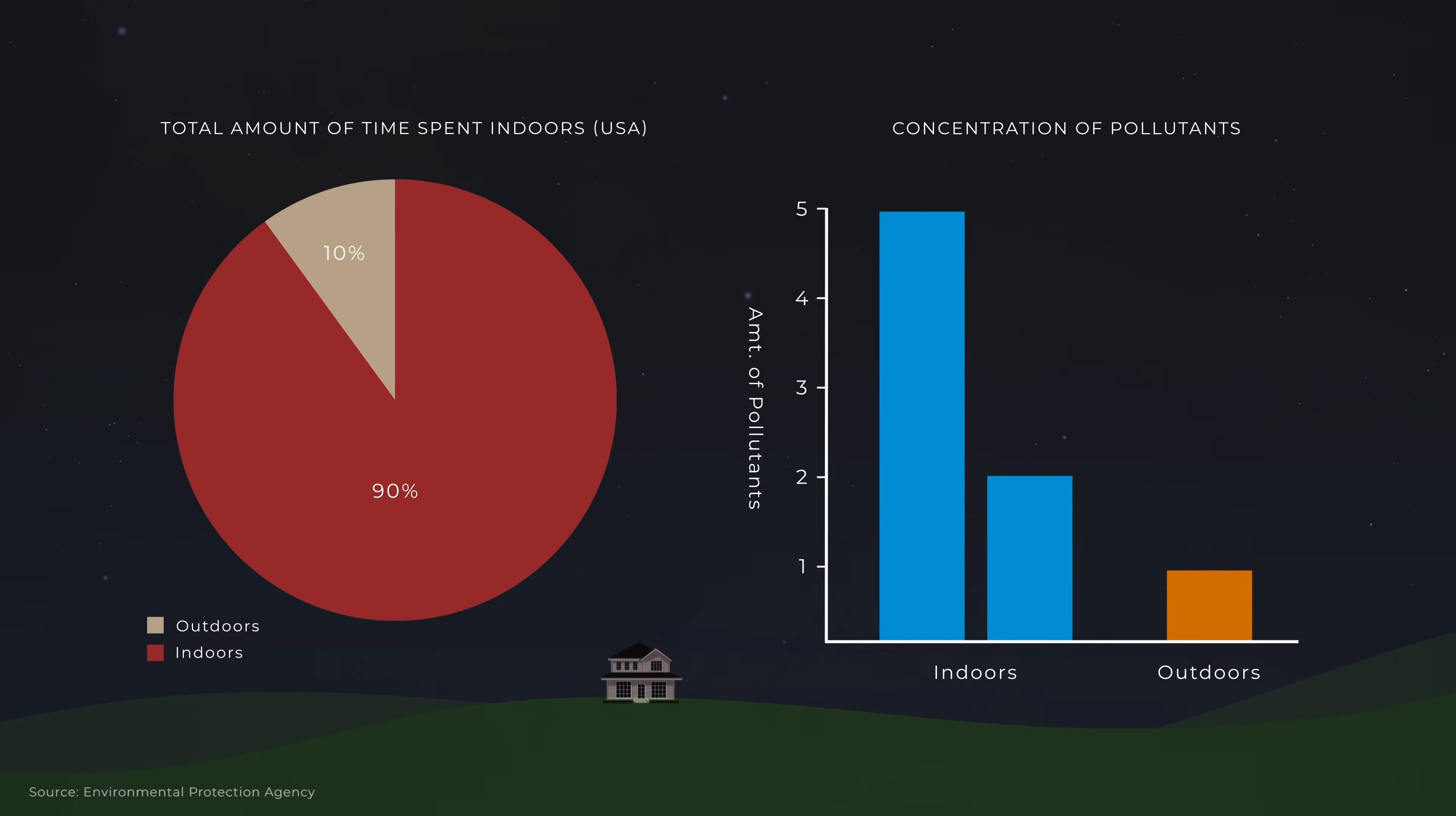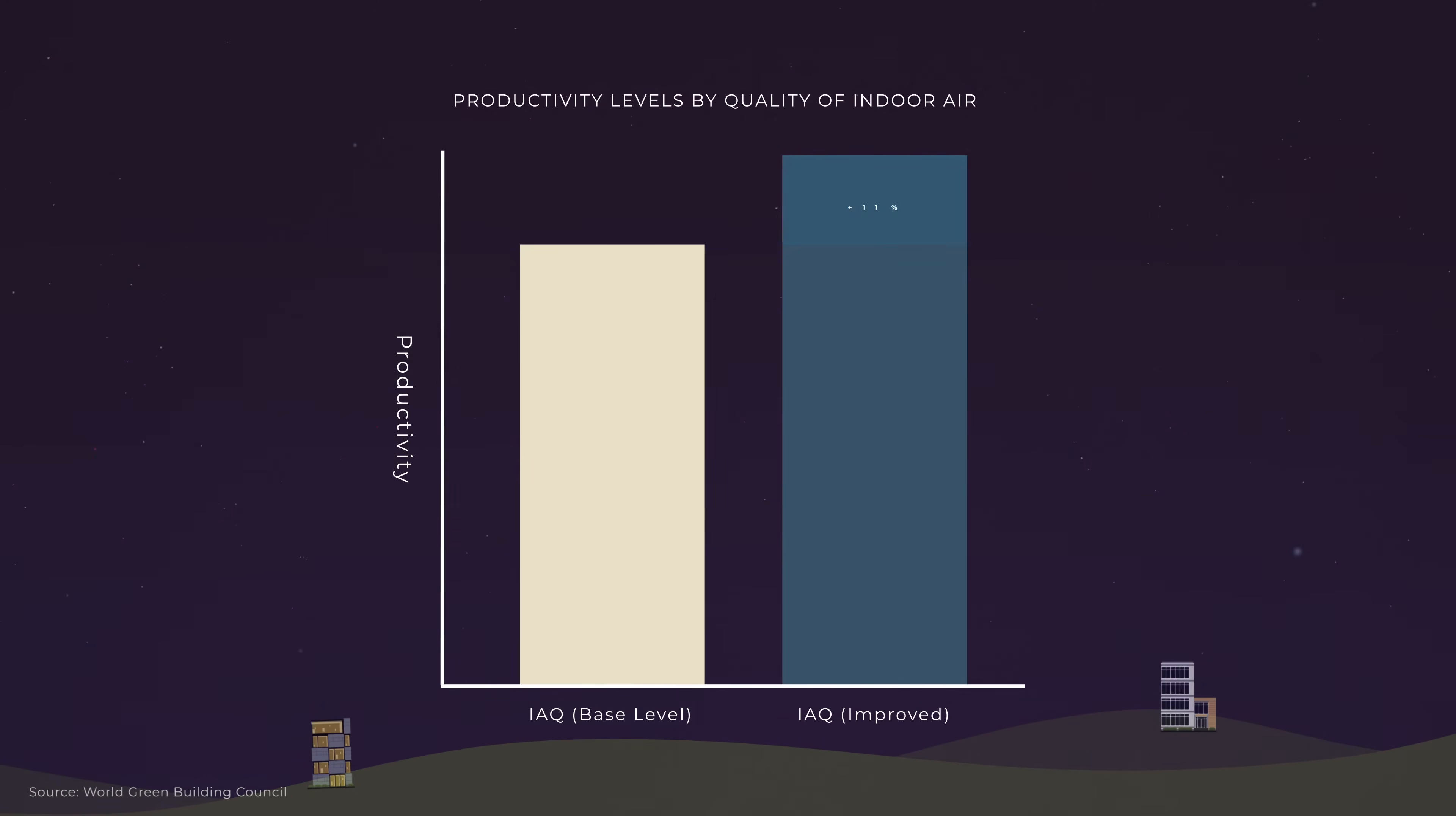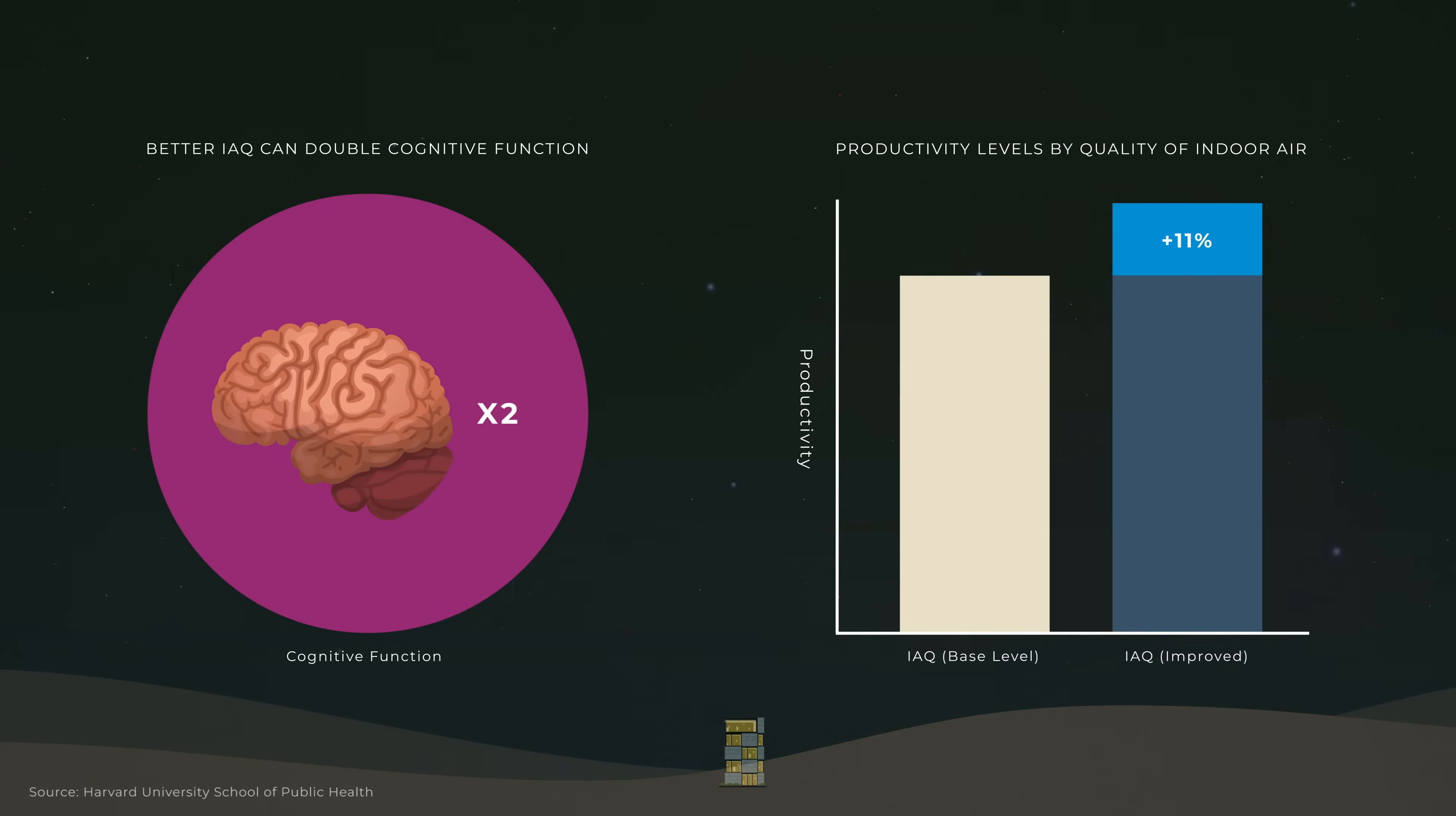Improved air quality can increase productivity by 11 percent, and according to a 2015 double-blind study from Harvard, it can double the cognitive function of those in offices with average levels of the same pollutants.